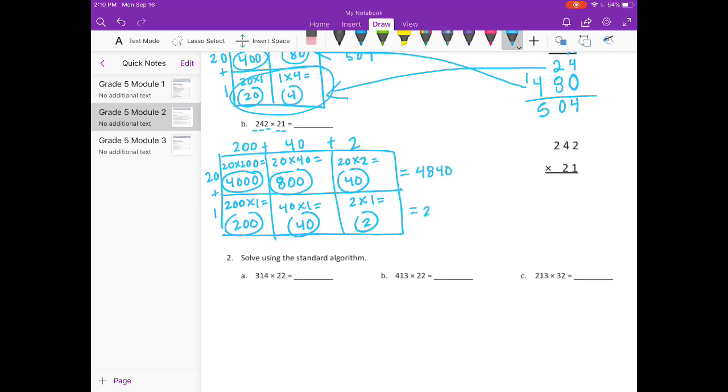And down here we have 242. And then if we add those together, 4,840 plus 242 should get 5,082. So let's see if that's what we get with the standard algorithm.